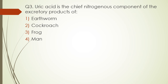Question number three. Uric acid is the chief nitrogenous component of the excretory product of which organism: earthworm, cockroach, frog, or man? The correct answer is option two, that is cockroach.